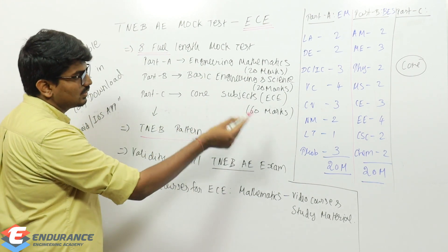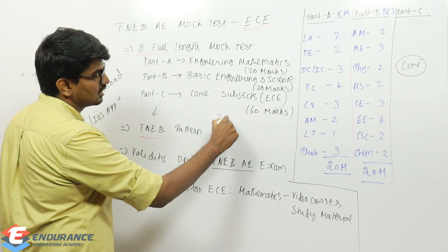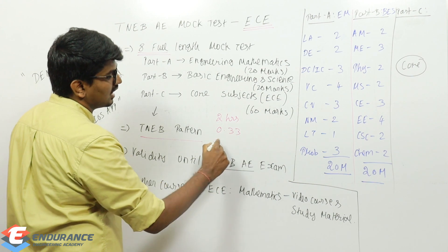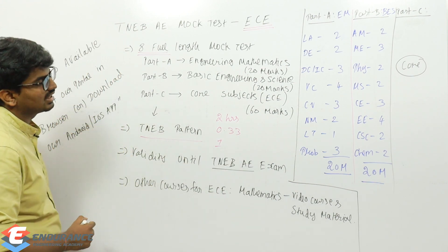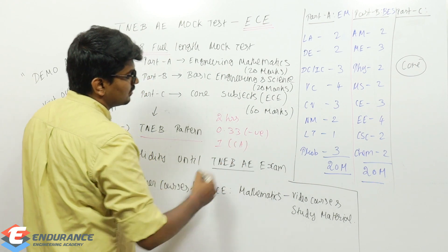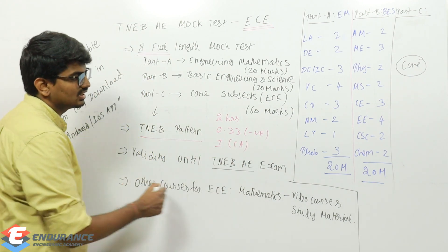The exam will be according to TNEB pattern - total 100 marks, number of hours will be two hours with negative marks of 0.33. For each correct answer you will be getting one mark, and the validity of the test series will be until TNEB AEO exam.